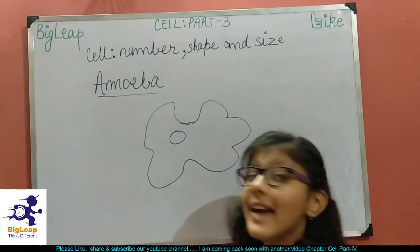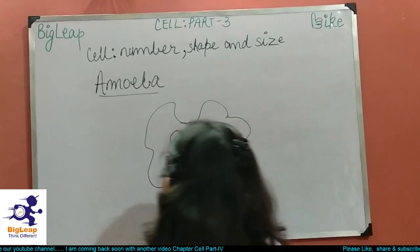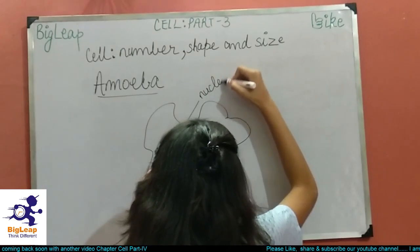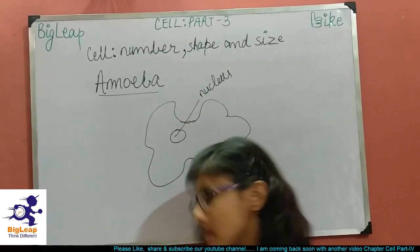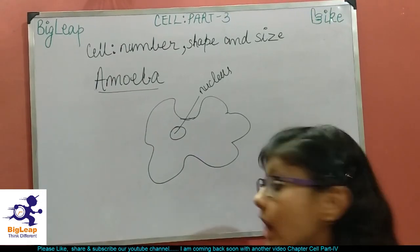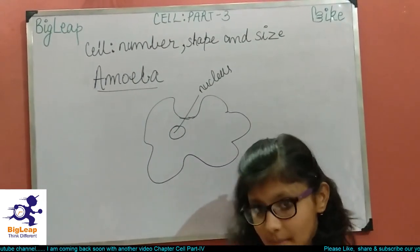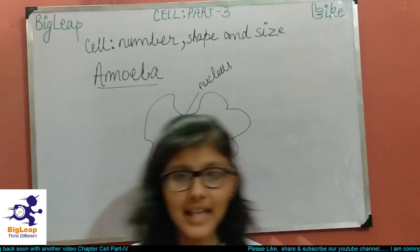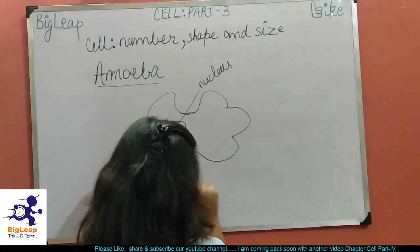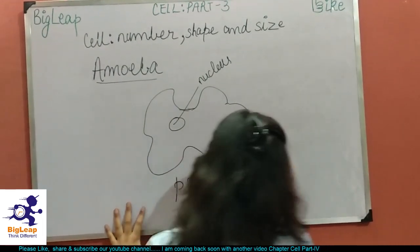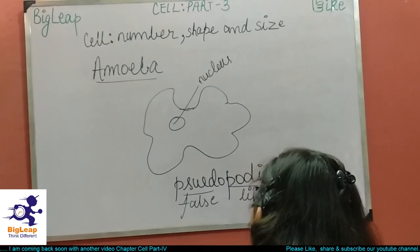Amoeba can reproduce, multiply, divide, eat, and digest everything on its own — it has a nucleus. Now, amoeba is a unicellular organism, so it has only one cell — no legs, feet, hands, or palms. So how does amoeba travel?